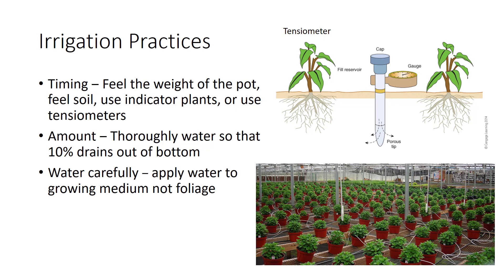Thoroughly water each time plants are irrigated, but do not overwater. About 10 percent of the water applied to a pot should drain out of the bottom, which ensures that the soil is thoroughly wet and helps flush out excessive salts that may have accumulated in the pot. To prevent disease, apply water to the growing medium and not to the foliage or flowers.